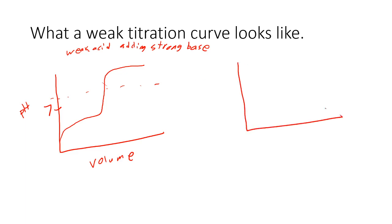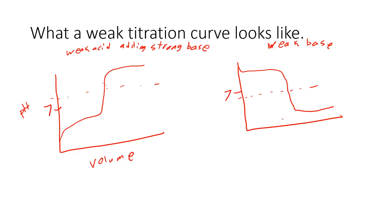For the weak base case (adding a strong acid), we start where it's basic, it goes more basic briefly, then flattens in the buffer region, then has a sharp drop through the equivalence point. Here the equivalence point occurs below pH 7 — it's slightly acidic — because all the weak base turned into its conjugate weak acid. These curves differ from the strong cases in that the beginning looks different with more gradual change, and the equivalence point occurs at a different pH: basic for weak acid titrations, acidic for weak base titrations.